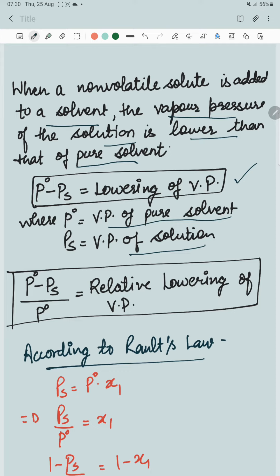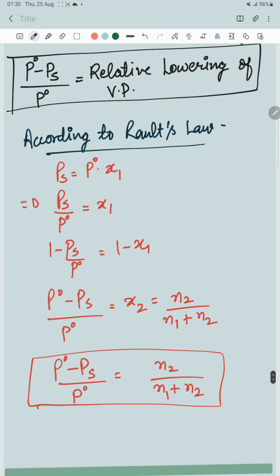So the ratio with P0 gives relative lowering of vapor pressure. According to Raoult's law for dilute solutions, as we know,